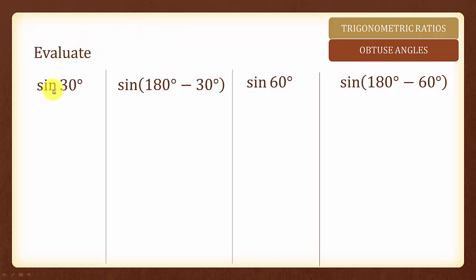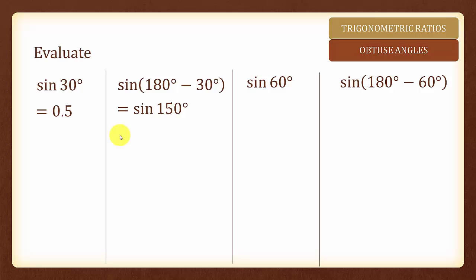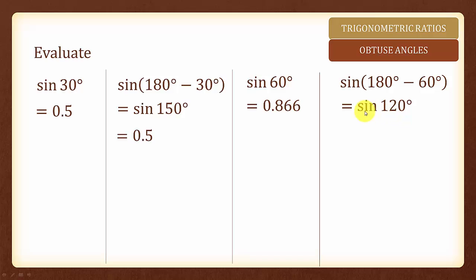Can you evaluate the following? Sine 30 degree — by pressing the calculator, we will have 0.5. Next, sine 180 degree minus 30 degree will be equal to sine 150 degree, and by pressing the calculator, we will have 0.5 as well. Next, sine 60 degree will be equal to 0.866 rounded off to 3 significant figures. And sine 180 degree minus 60 degree will give us, by pressing the calculator, 0.866 as well.